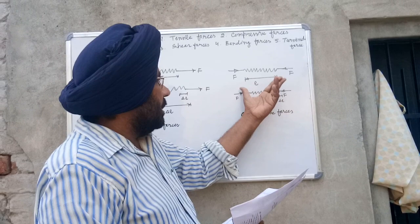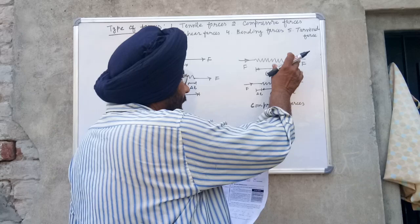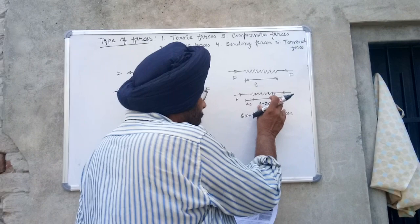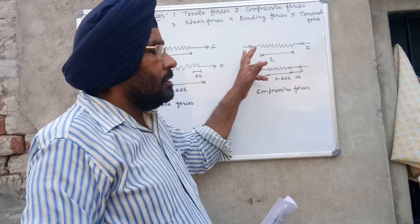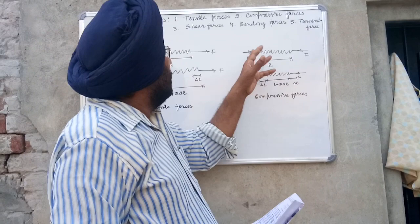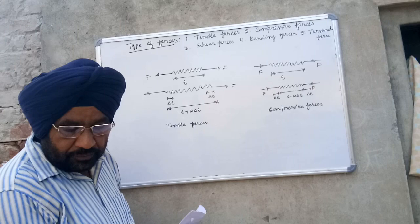Now consider the same spring with forces acting as shown in this figure. The length of the spring is L. Due to this force, the length of the spring has decreased by an amount delta L plus delta L, that is 2 delta L, and the final length of the spring is L minus 2 delta L. Compressive forces are forces of equal magnitude but opposite direction, having the same line of action, that tend to decrease the length of the body.